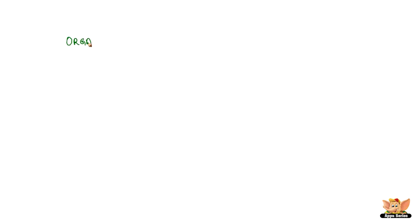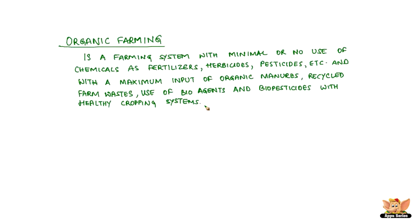Farming done with no chemicals or minimal chemicals is called organic farming. It is a farming system with minimal or no use of chemicals as fertilizers, herbicides, or pesticides, and with the maximum input of organic manure recycled from waste. It also involves the use of bioagents and biopesticides like neem leaves or turmeric for grain storage, along with healthy cropping systems.